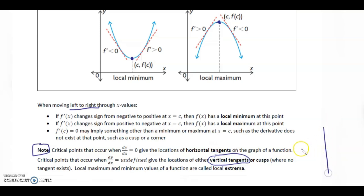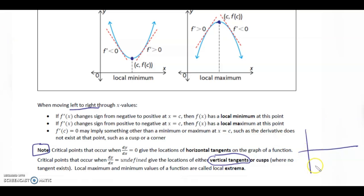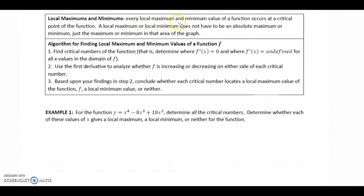In regards to a vertical tangent, that occurs when you have some function — we could have a function where just for a split second there's going to be a vertical tangent. Because it's vertical, it's undefined. Every local maximum and minimum value of a function occurs at a critical point of the function. A local max or local min does not have to be an absolute max or absolute min — just the maximum or minimum in the area of that graph.